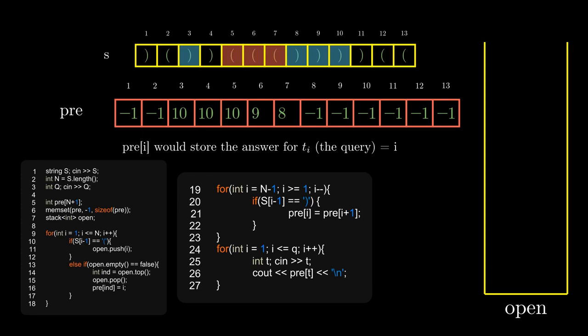So what we can do is iterate in reverse from n-1 to 1 and assign pre[i] as pre[i+1]. In that way, all closing bracket indices will have the value at the next valid opening bracket's indices. And then finally, to answer our queries, we just print the value of pre[t].